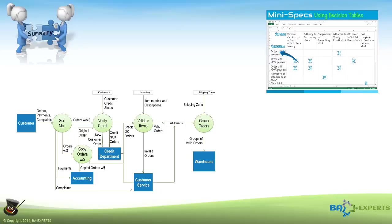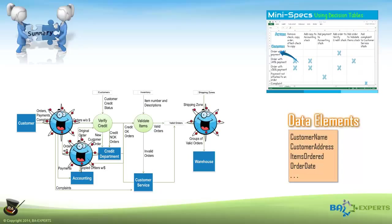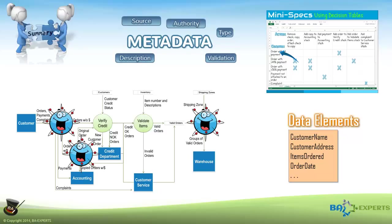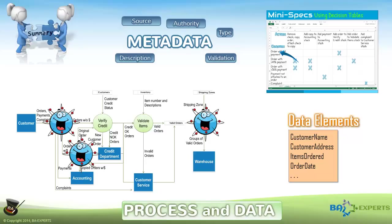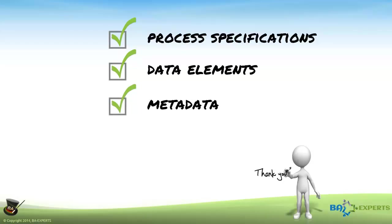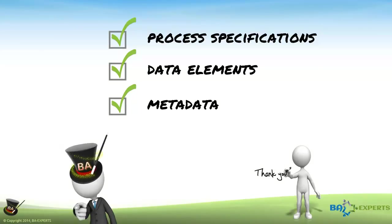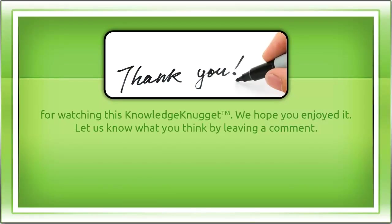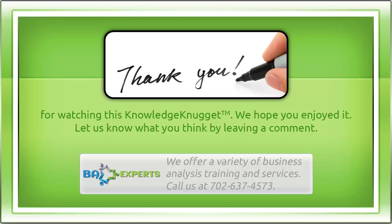To summarize: at the lowest level of detail, a data flow diagram may need to have process specifications for every functional primitive process, a list of all data elements for every data store and data flow, and appropriate metadata for each data element. Only when you achieve that level of detail can you claim that you have a fully fleshed out data flow diagram depicting the process and relevant data for your project. Thank you for viewing this Knowledge Nugget. Now that you know how to flush out and capture process specifications, identify data elements, and get the metadata, make good use of these techniques when you are the one wearing the BA hat.